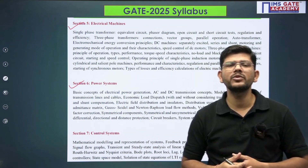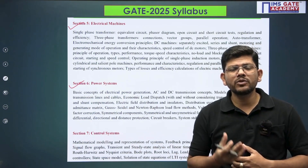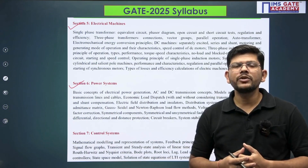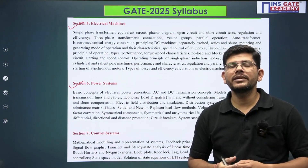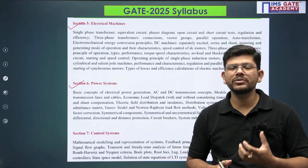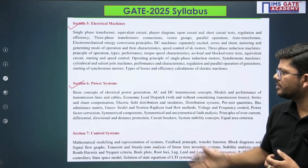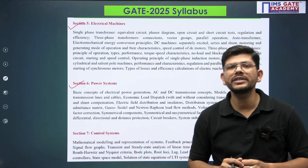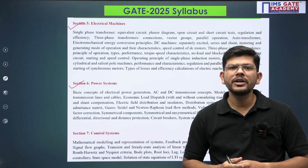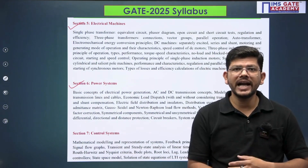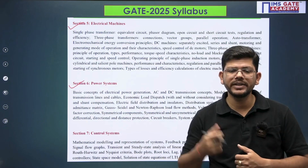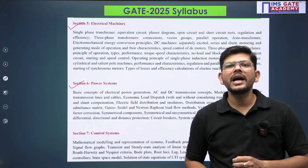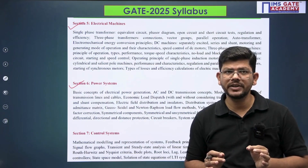Under Power Systems, you have to cover performance parameters of transmission lines, fault analysis, power system stability, protection systems, compensation techniques, insulators, cables, and distribution. Go through the syllabus carefully and be very specific, because machines and power systems have a wide range of syllabus. Study past GATE questions to identify what's important and eliminate what's not.